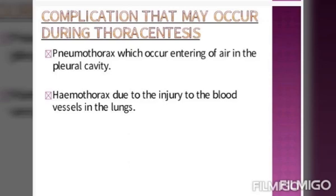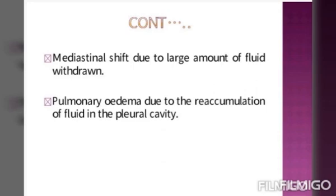Complications that may occur during Thoracocentesis: pneumothorax, which occurs when air enters the pleural cavity; hemothorax, which occurs due to injury to a blood vessel in the lungs; mediastinal shift, which occurs due to large amounts of fluid being withdrawn; and pulmonary edema, which occurs due to reaccumulation of fluid in the pleural cavity.